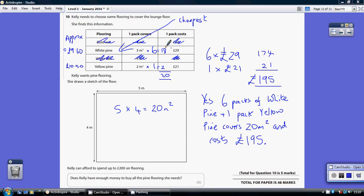Well, do 29 divided by three and that's about £9.60. Whereas the yellow pine, 21 divided by two is about £10.50 each. So really the white pine is the cheapest one. So that's the one to focus on. So let's buy as much white pine as we can.